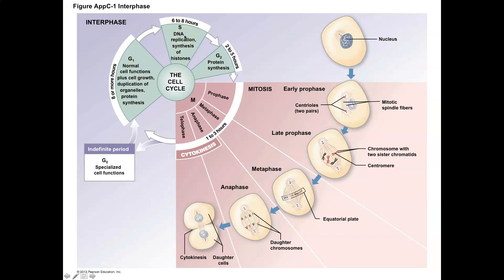The S phase is actually really important because this is where DNA replication takes place. If you're going to have mitosis and create two nuclei and eventually two new cells, you need to make a copy of the genetic information to pass on to the next cell. The G2 phase is really preparation for cell division — you'll see a lot of protein production and synthesis for enzymes and protein signals necessary for the mitotic phase.